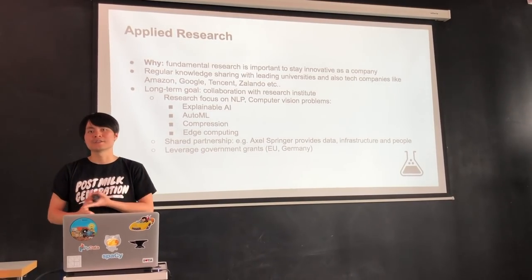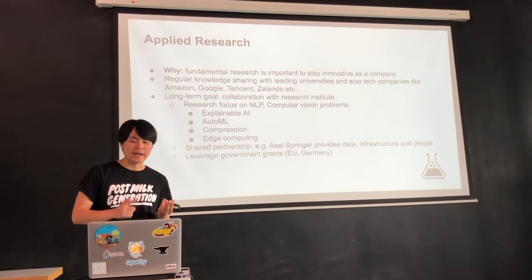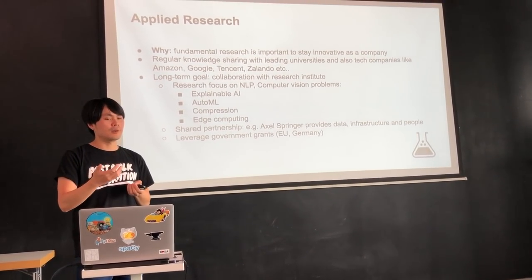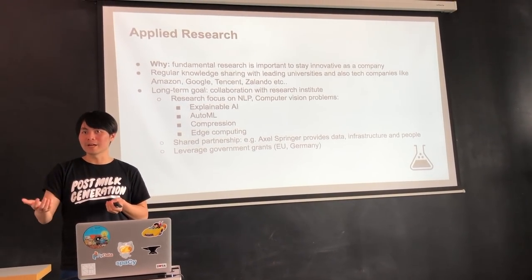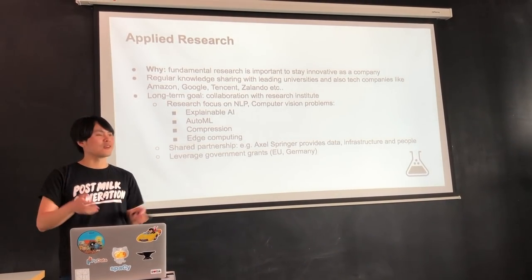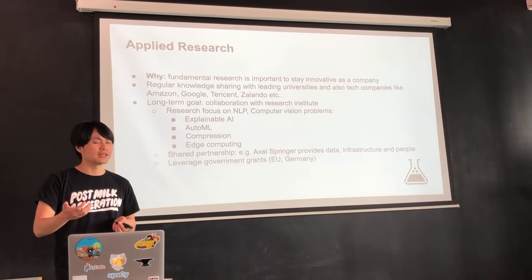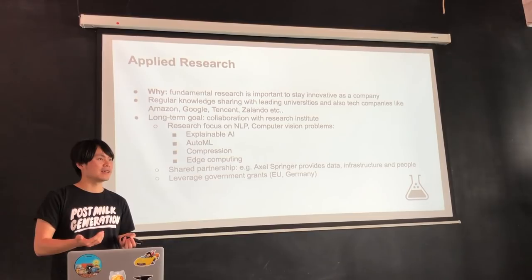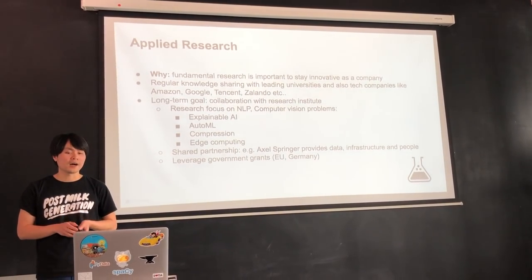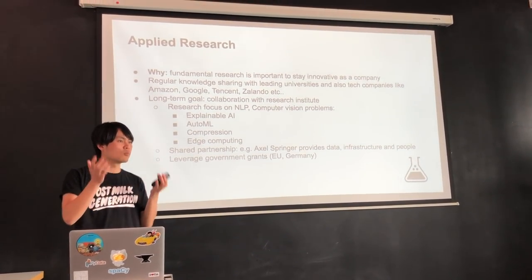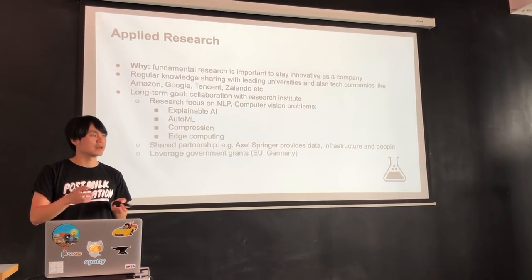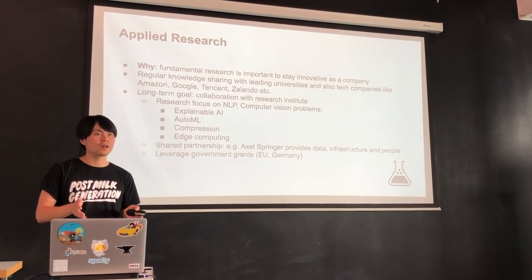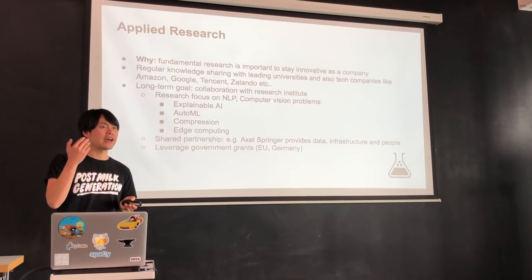The long-term goal is to create a research lab with research scientists and research engineers working on topics like explainable AI, model compression — which is a very important topic — and hyperparameter tuning. Not many of us have thought about what happens when you run a deep neural network on a mobile phone: it's very slow with many parameters, and the user experience suffers. This is something we need to think about and work on for our survival as a company. There are still open questions like how to fund it — maybe leveraging government grants, since the German government does have research funding available — and how to build university partnerships.